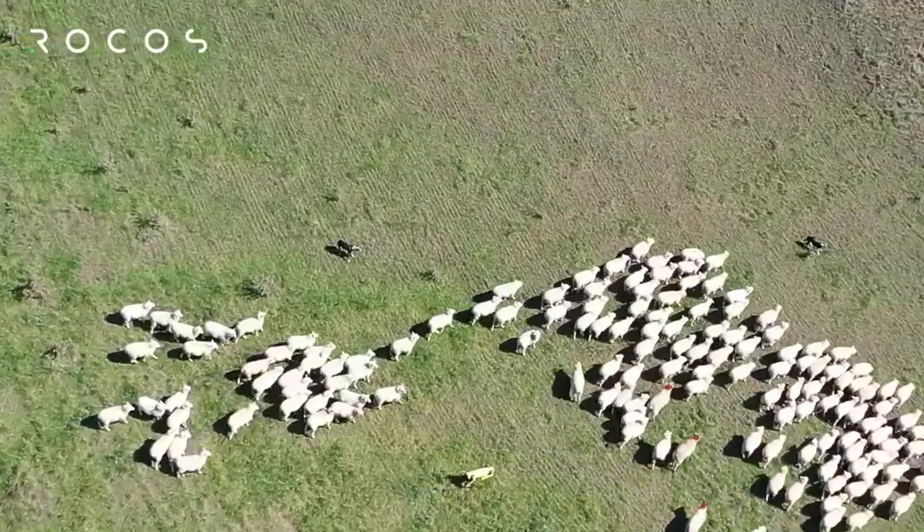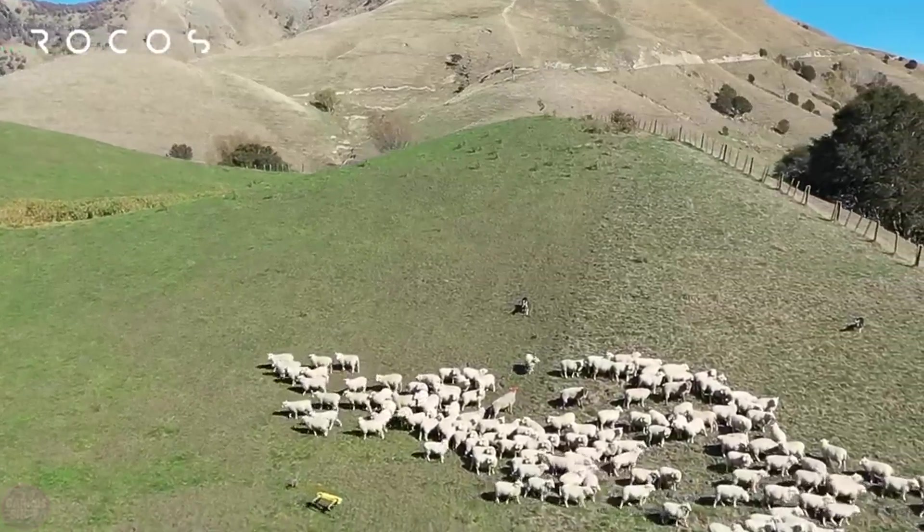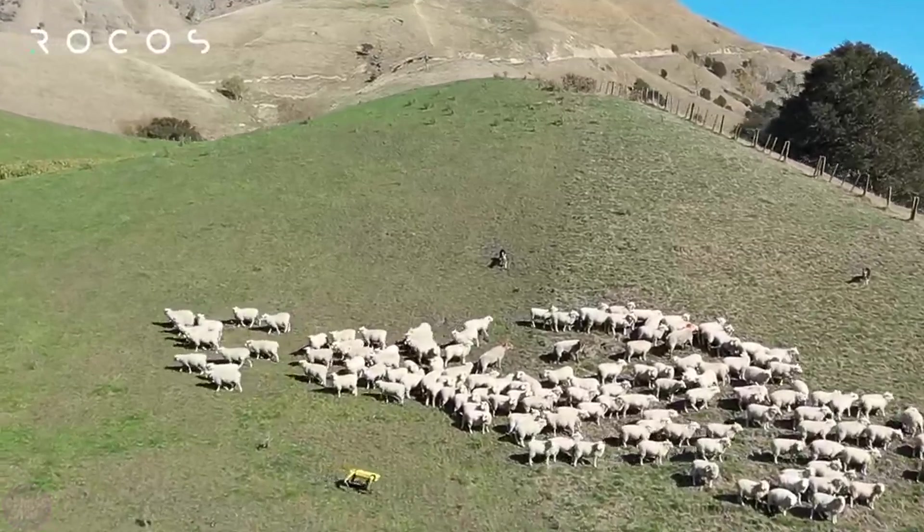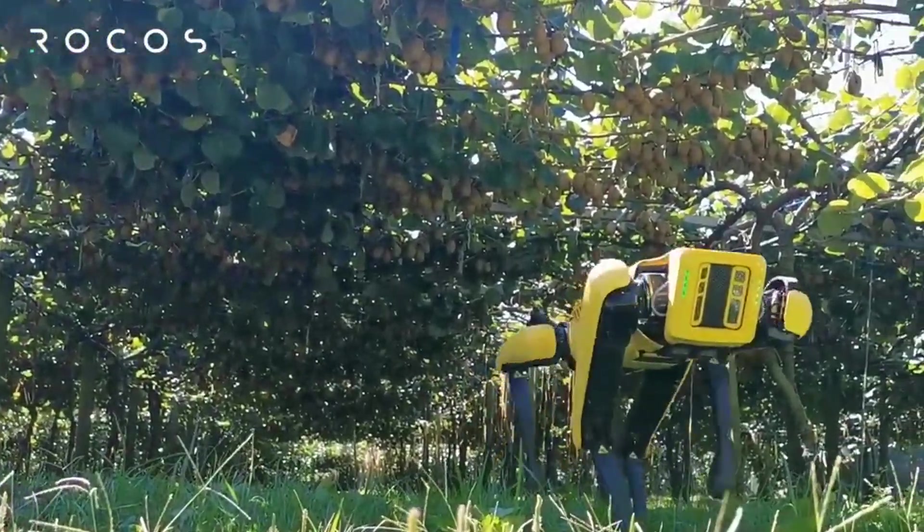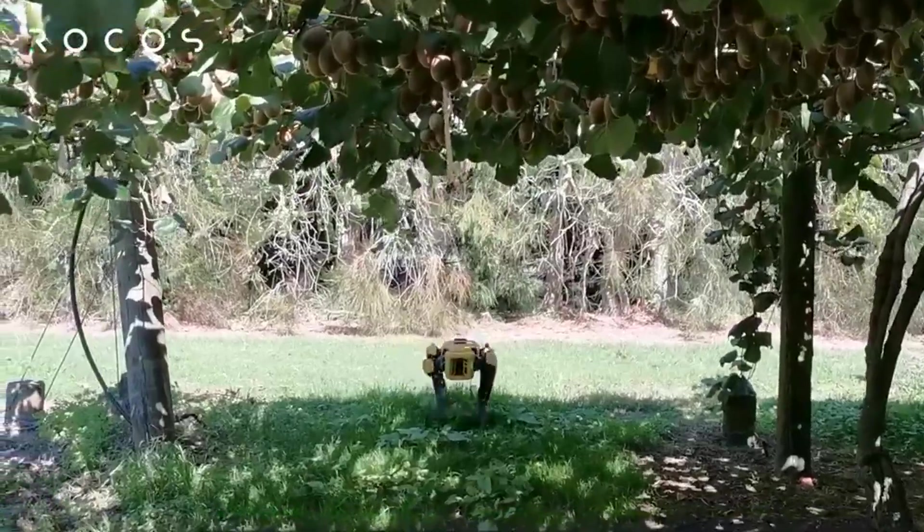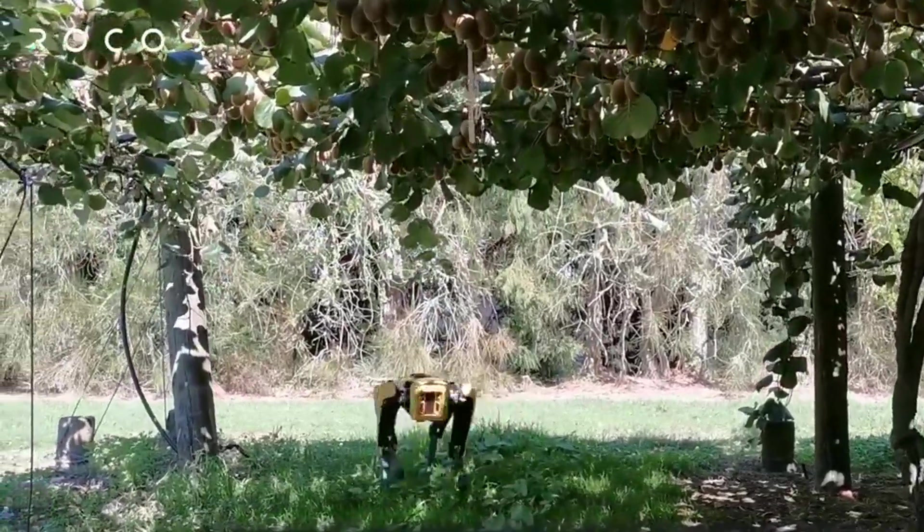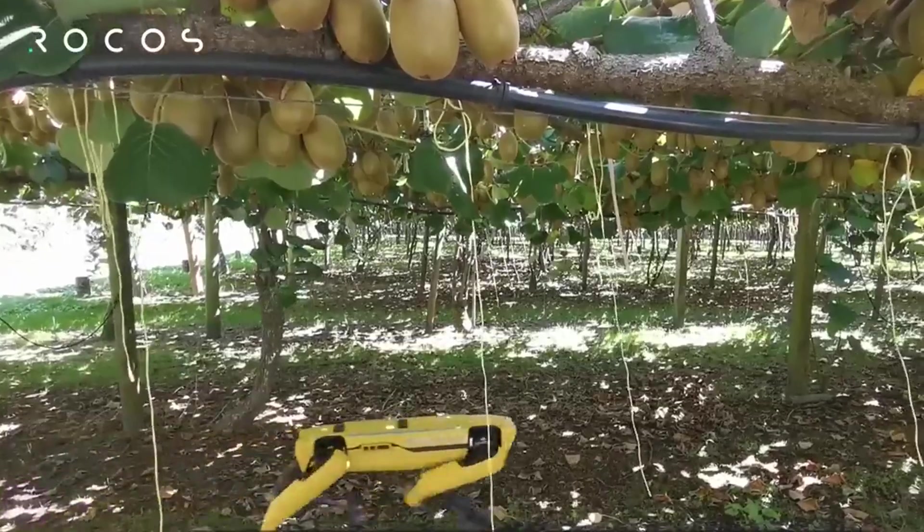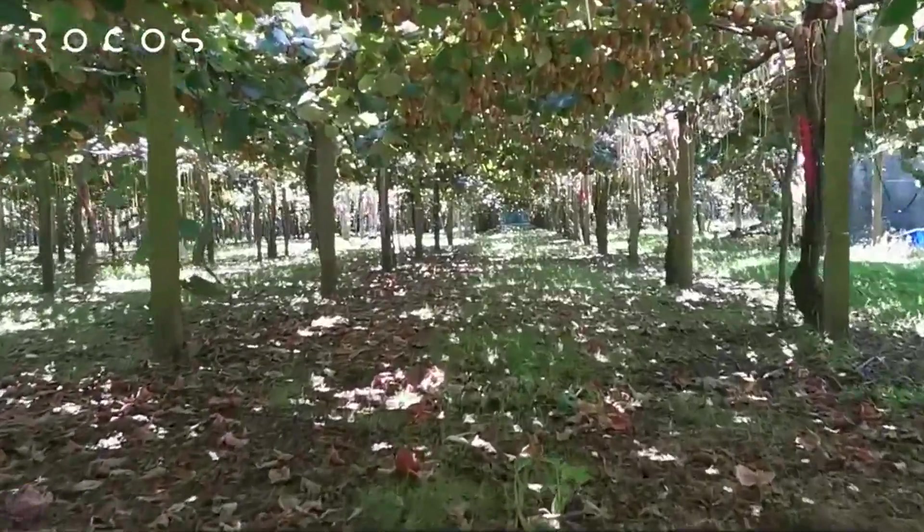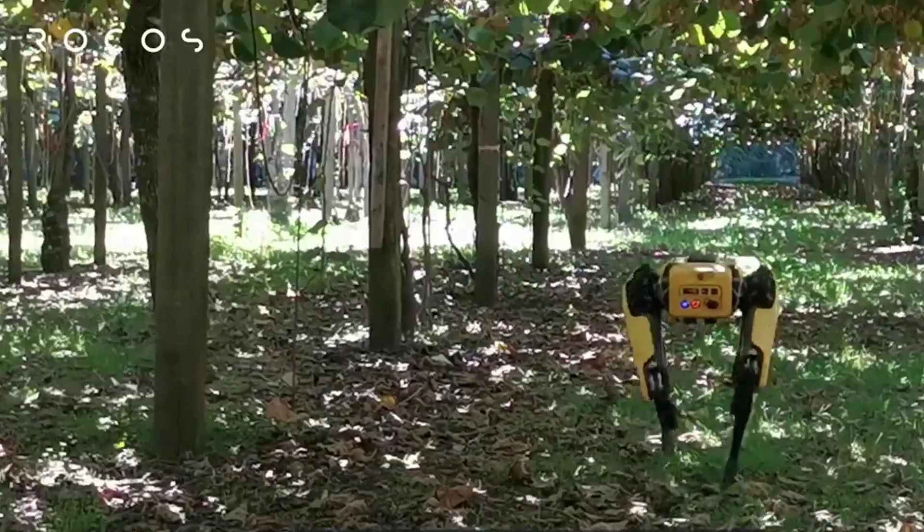But that's not all the news from the company. The Boston Dynamics Spot robot herds sheep, checks crops, and lounges in the grass in a new video. New Zealand company Rokos intends to make this a reality. Rokos demonstrated how such a device can be used in agriculture. For now, it's a showcase of capabilities that are expected to be implemented in the future.